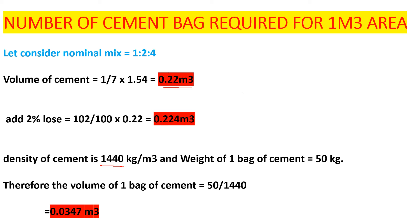Let's get the volume of one bag of cement. Cement has a density of 1440 kg/m³ and one bag weighs 50 kg. Volume equals weight divided by density, so 50 divided by 1440 gives us a volume of 0.0347 cubic meters. So one bag of cement has a volume of 0.0347 cubic meters.